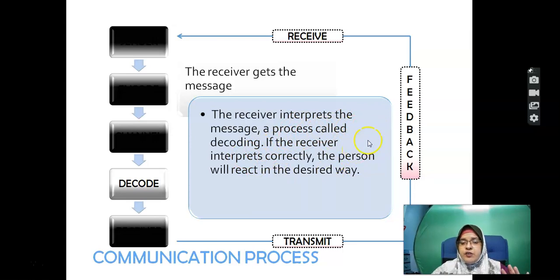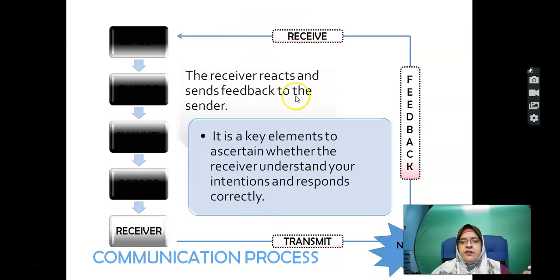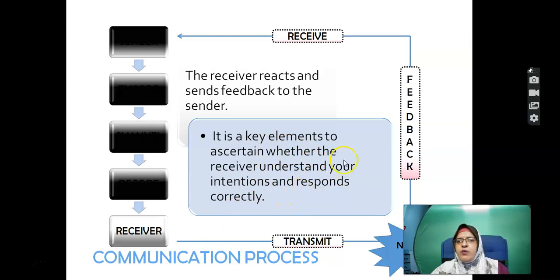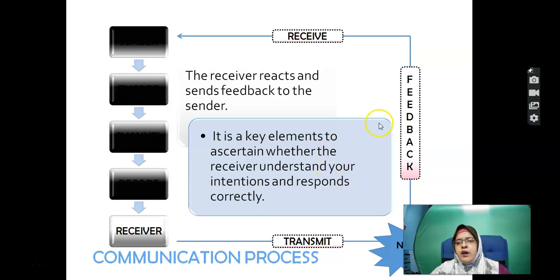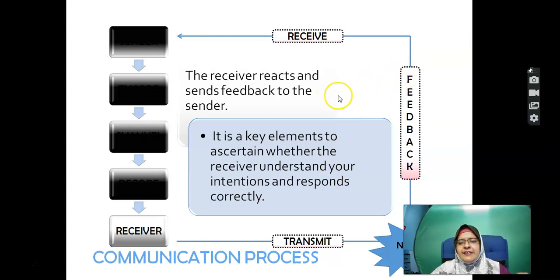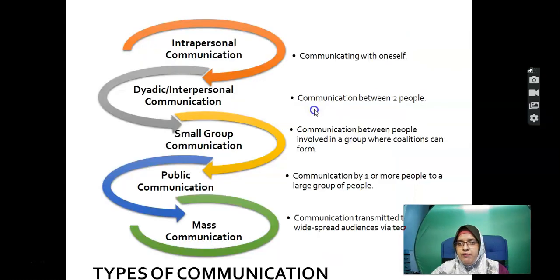You will then interpret the message through a process called decoding. If you interpret correctly, you will react in the desired way — meaning you understand what is being said. The receiver reacts and sends feedback to the sender, which is a key element to ascertain whether the receiver understands your intention. If you do or don't understand, you can respond via WhatsApp to ask for clarification.